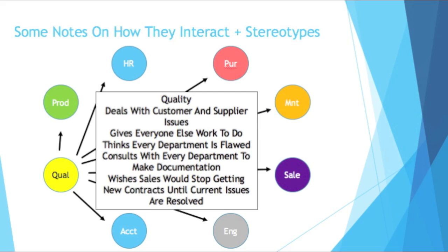Quality deals with customer and supplier issues. Stereotypically, quality gives everyone else work to do, so people weren't always happy to see us walking their way. Quality comically thinks every department is flawed just because we're always dealing with issues all the time. Quality will consult with every department to make documentation and fix customer issues of some sort. Quality jokingly wishes sales would stop getting new contracts until current issues are resolved — but of course in business you want to keep growing, so it's good to get new sales.